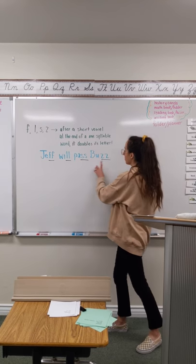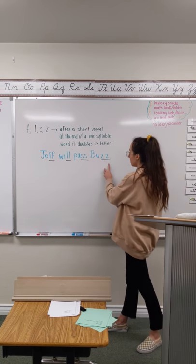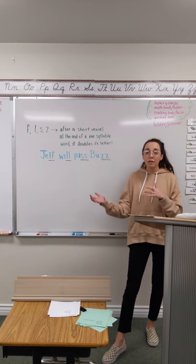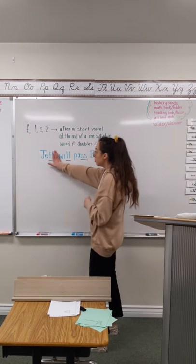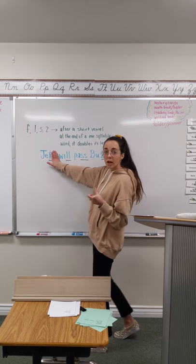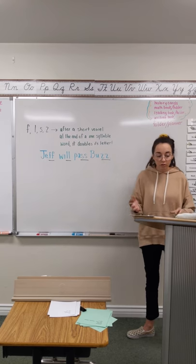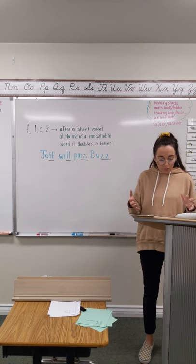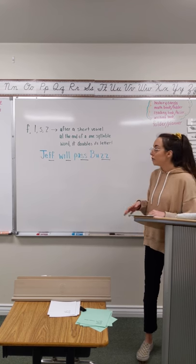So, we have a really fun little reminder. Jeff, double F, will pass buzz. Double L, double S, double Z. So, anytime we have an F at the end of a word, we would never spell Jeff with just one F. We would spell Jeff with two F's. It just is a spelling rule that the English language that God actually created, it's really, really important to do that.